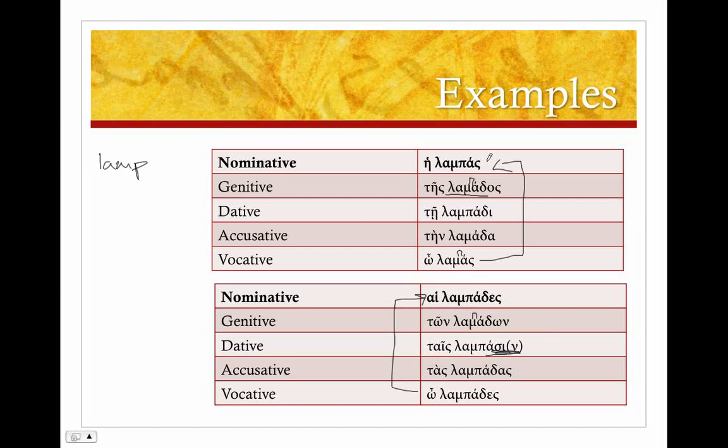So we have our endings: nothing, -os, -i, -a. Plural: -es, -on, -sin, -as. And we just need our stem. Let's look at another example.